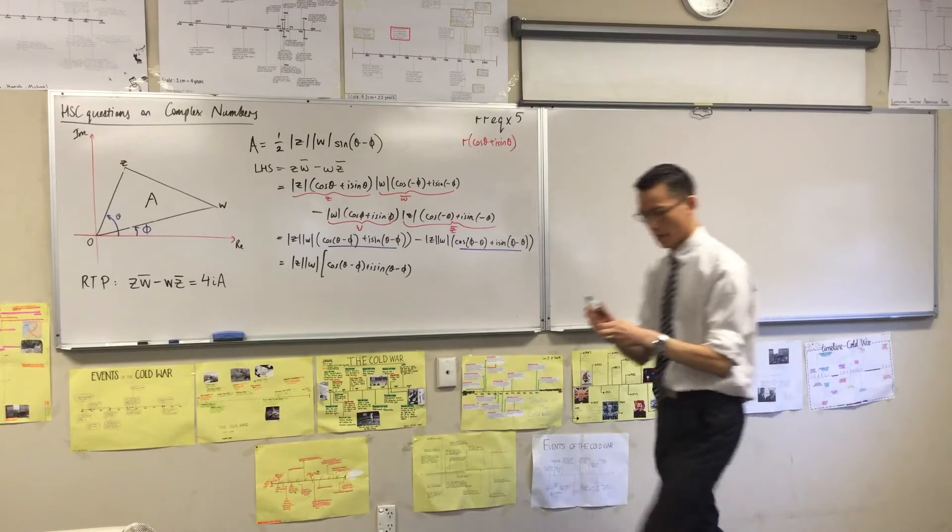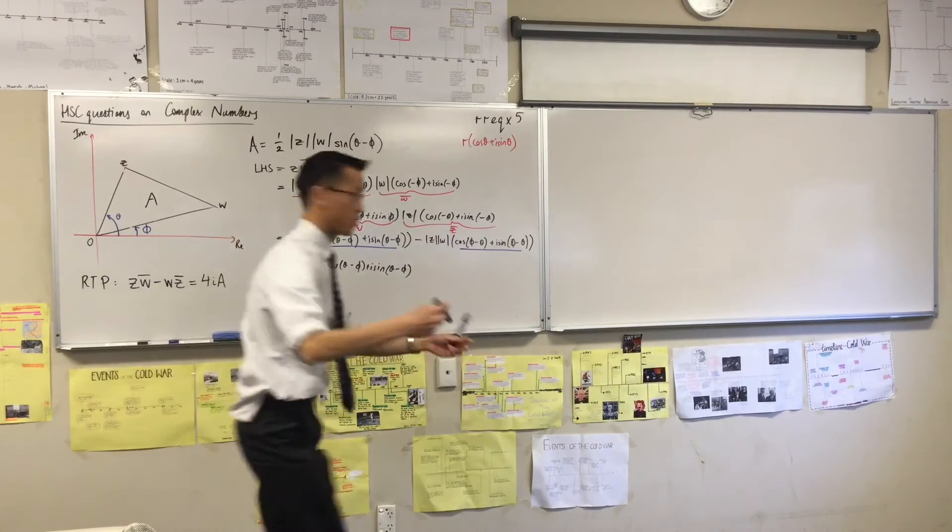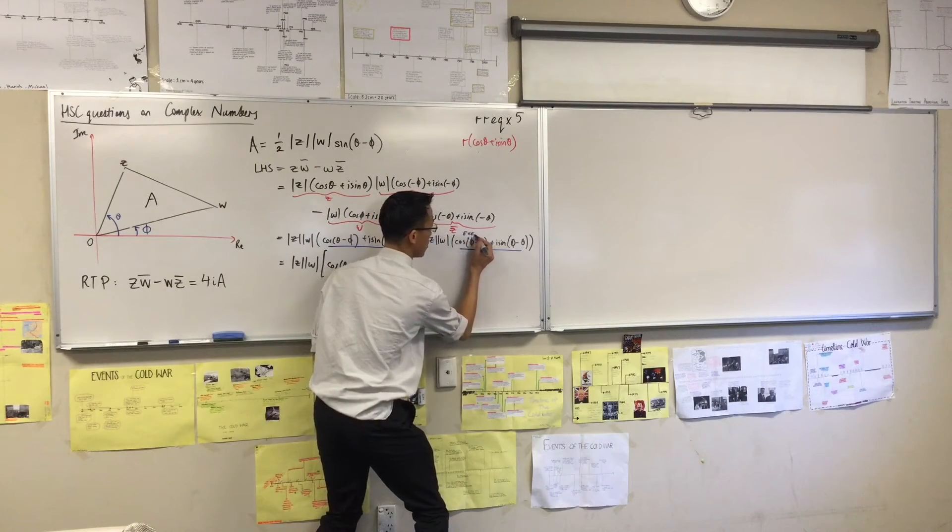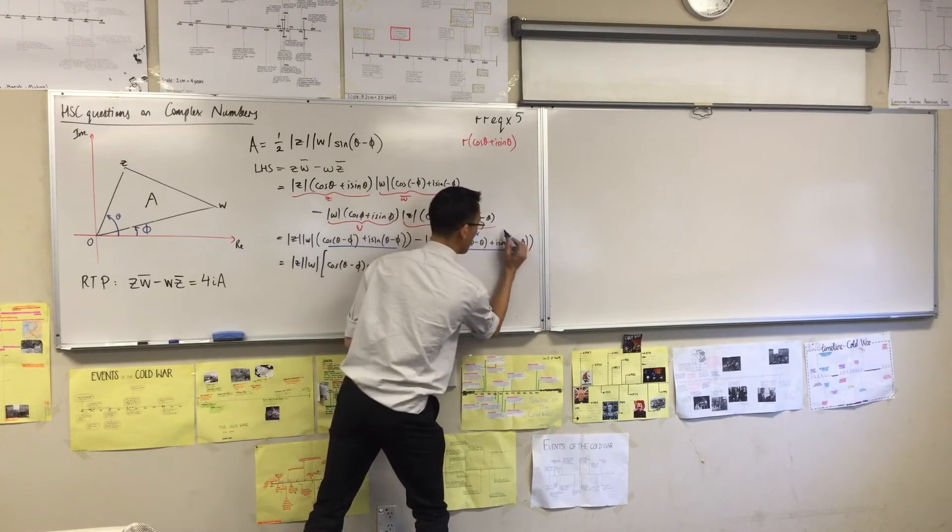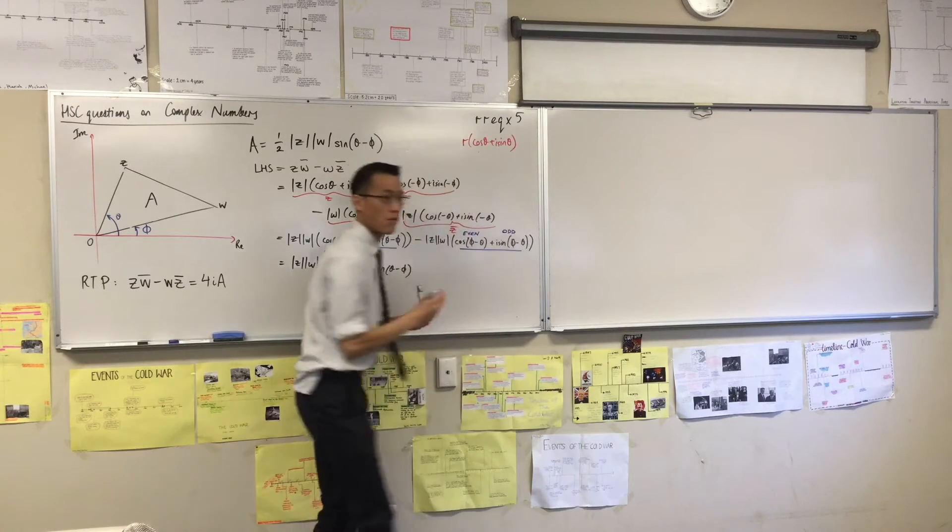Cos is even. Good. Cos is even. Maybe you want to even jot this down for yourself. This guy is even. And this guy is odd. Right?